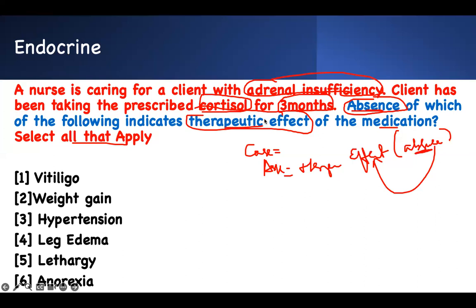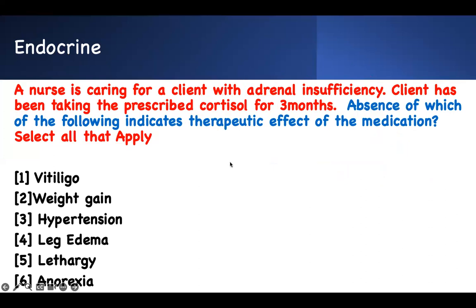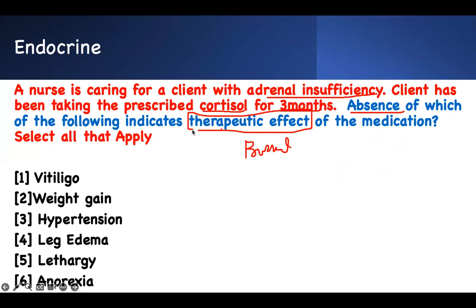I'm spending time to break it down so that I don't get confused. What is the case? You have adrenal insufficiency, and you'll be taking cortisol for three months. I have adrenal insufficiency, I'm taking cortisol for three months, and I'm looking for absence of which of the following to indicate therapeutic effect. That means: if I don't see these things, the medication is working.